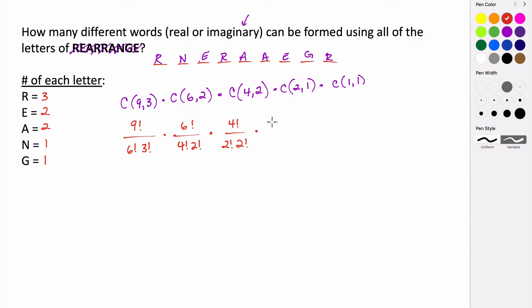And then we have 2 factorial over 2 minus 1, which is 1 factorial times 1 factorial, times 1 factorial over 1 minus 1, which is 0 factorial times 1 factorial.